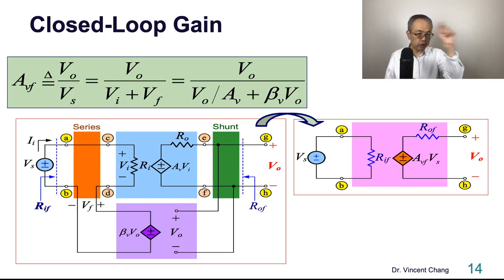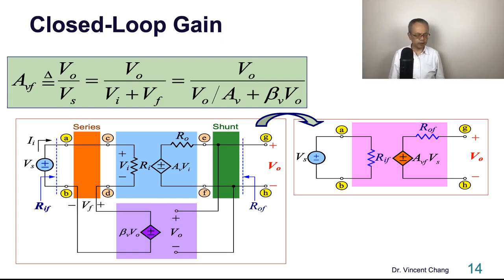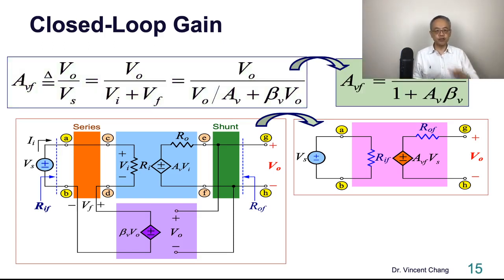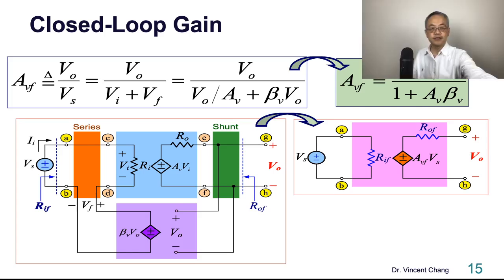Corresponding to Si times A equals So: Vo times beta equals Vf. So the subscript represents the nature of the amplifier — it's the voltage amplifier. The closed-loop voltage gain AVF equals the open-loop voltage gain Av divided by one plus Av times beta-V. This gives the relationship between the open-loop and the closed-loop voltage gain.